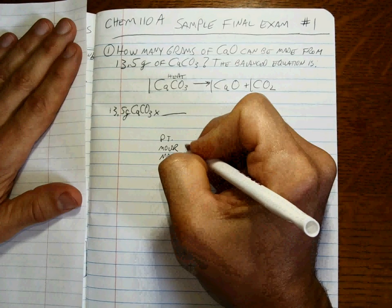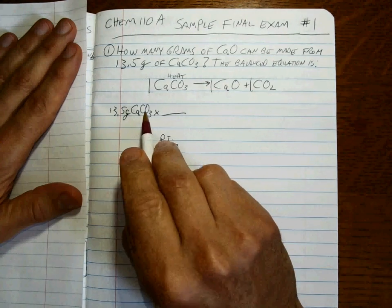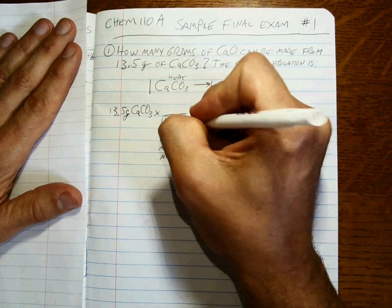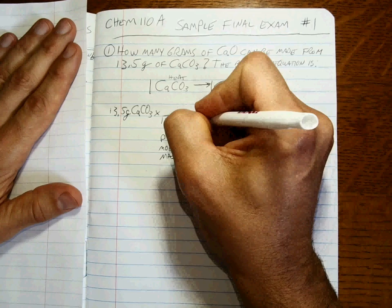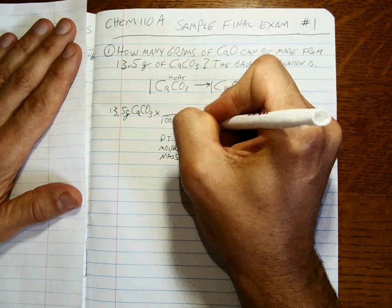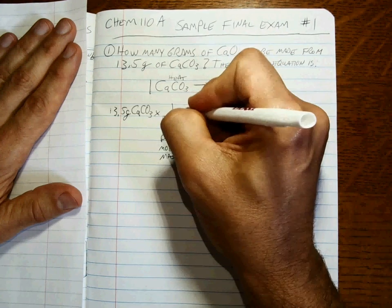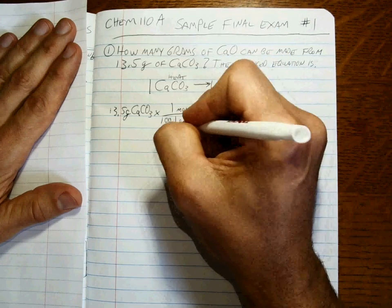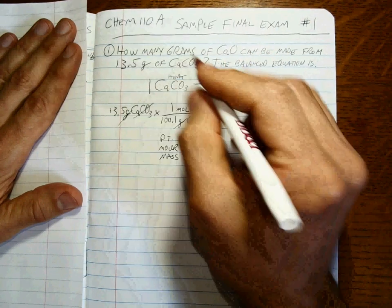I've already done that calculation. One calcium, one carbon, and three oxygens adds up to 100.1 grams of calcium carbonate for every one mole of calcium carbonate. Grams and the calcium carbonate cancel, and we're at moles of calcium carbonate.